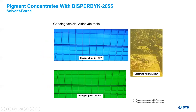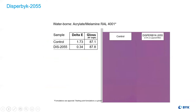DysRubic 2055 works beautifully in solvent-borne systems like aldehyde resin and in waterborne systems like acrylate and melamine.